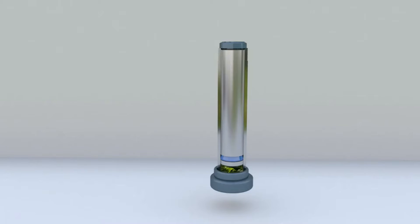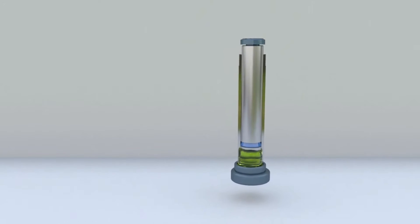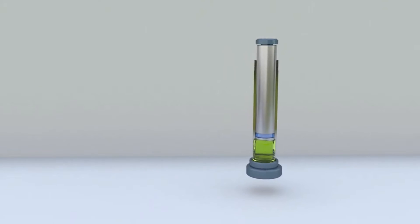In single-acting hydraulic cylinders, the liquid can only act on one side of the piston. The piston rod can be retracted by the weight of the load or by spring pressure. An example of a single-acting hydraulic cylinder is a jack cylinder.